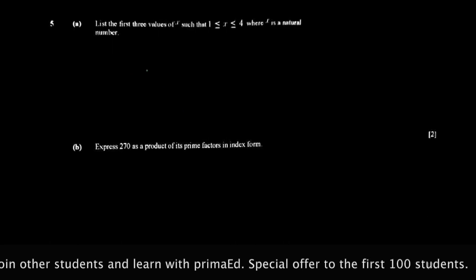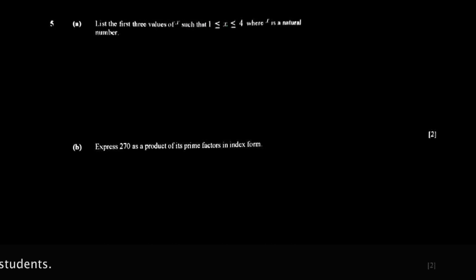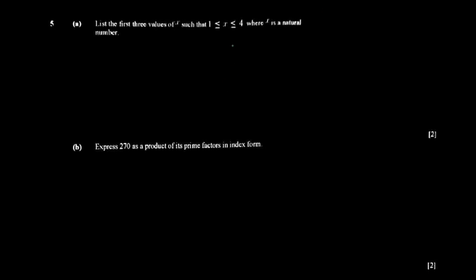Question 5b says: list the three values of x such that x is greater than or equal to 1 and less than or equal to 4, where x is a natural number. Natural numbers are 1, 2, 3, and so on. The set includes 1, 2, 3, and 4, but you only want the first three values, so the answer is 1, 2, and 3.